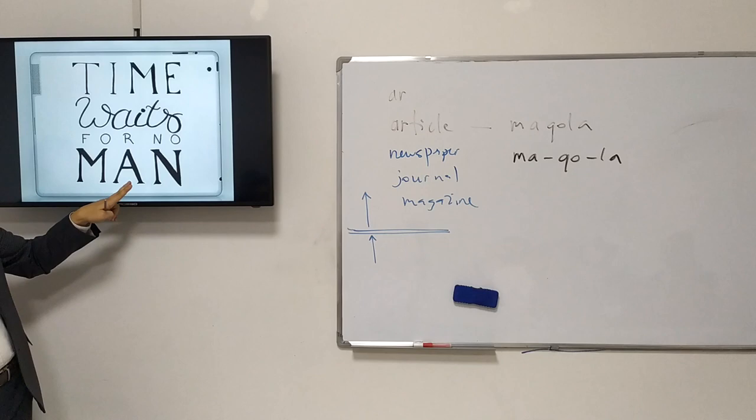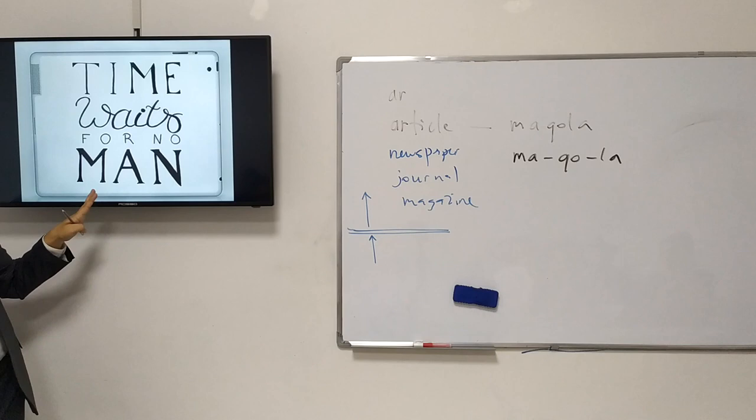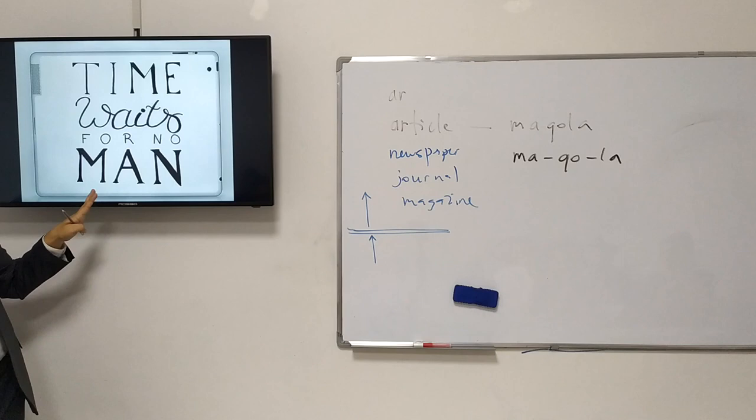For example, the time waits for no man. Time waits for no man. The time waits for no man.